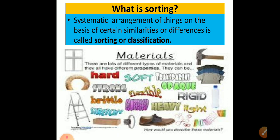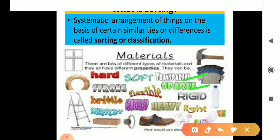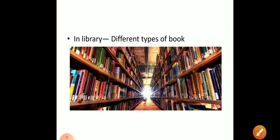In this picture you can see there are different types of materials — some may be hard and some may be soft. We can categorize them as hard material and soft material. Similarly, some materials are transparent, some are opaque, and some are translucent. We can categorize them on the basis of transparency. Like this, we can sort out different types of materials.